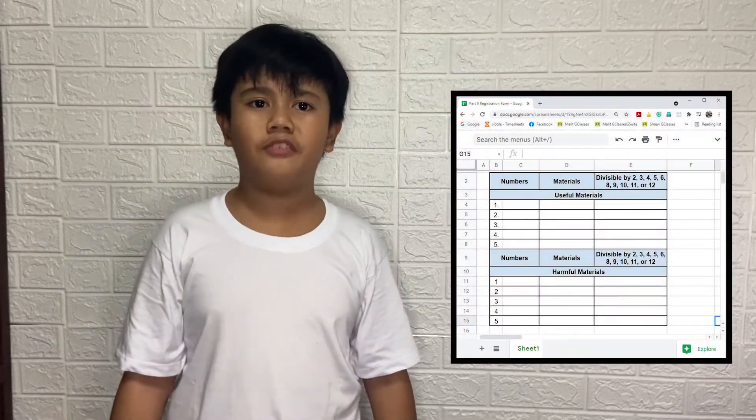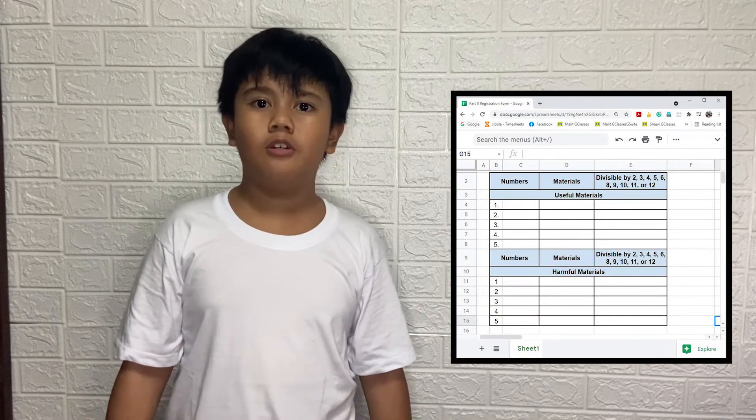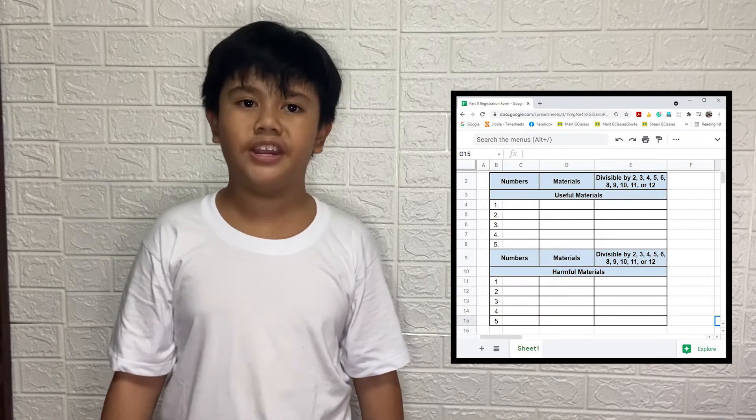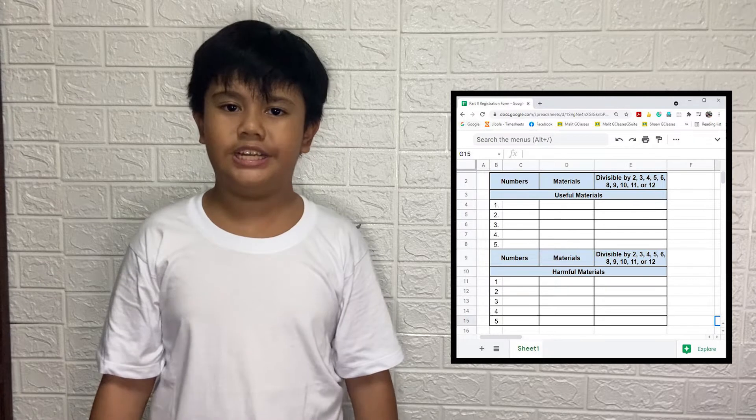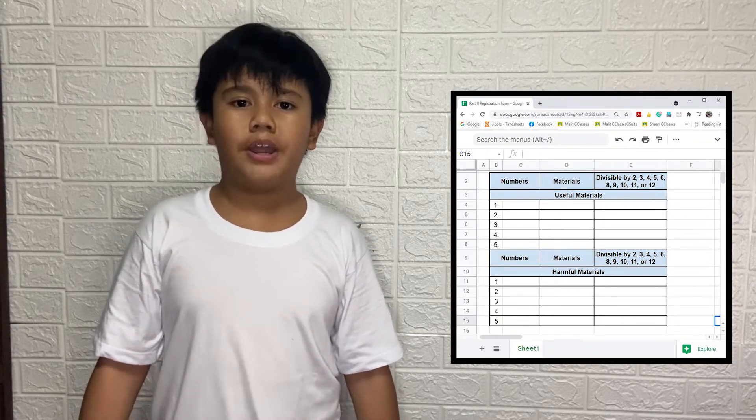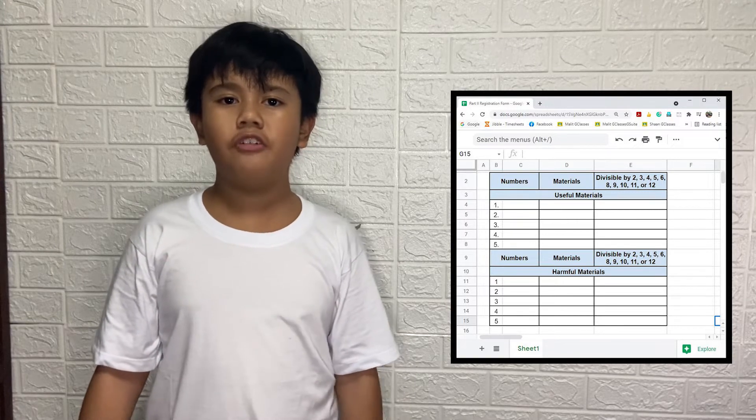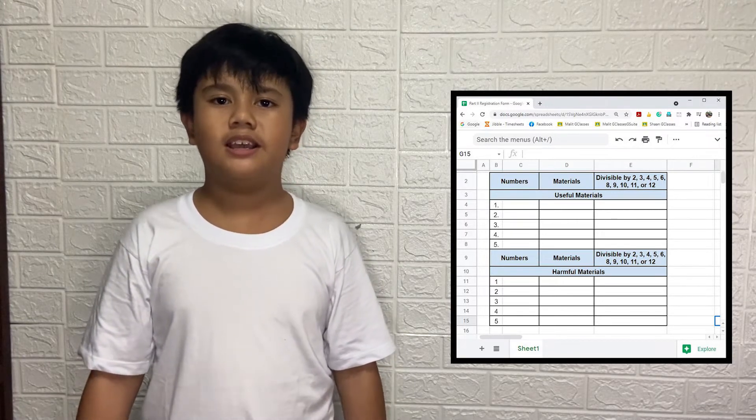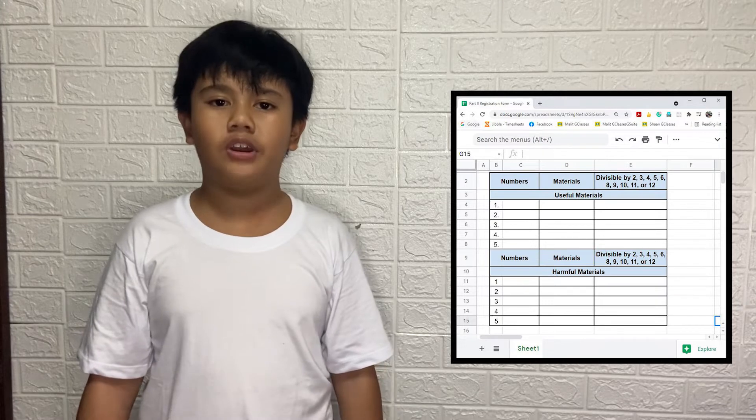In the next part of the form, a table with three columns are provided using Google Spreadsheet. In the first column, write ten numbers that are divisible by 2, 3, 4, 5, 6, 8, 9, 10, 11, or 12.